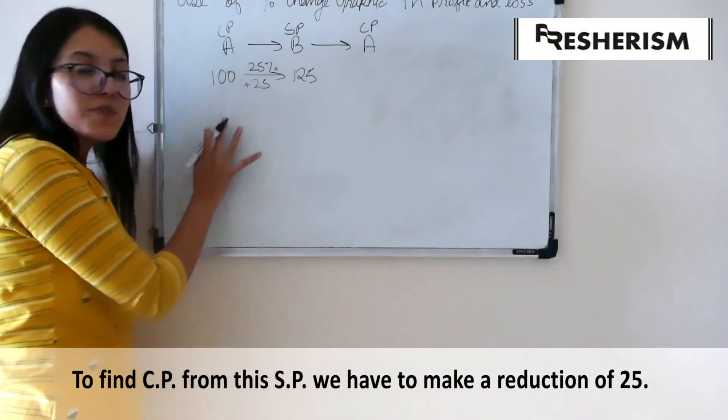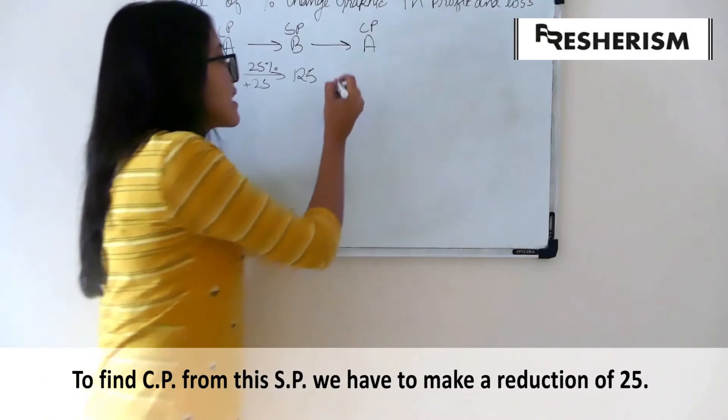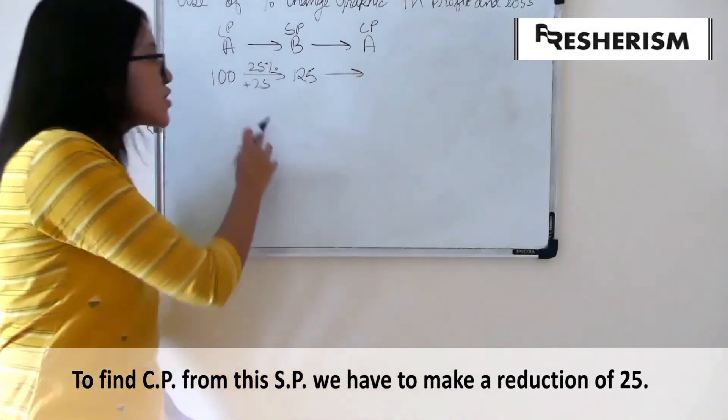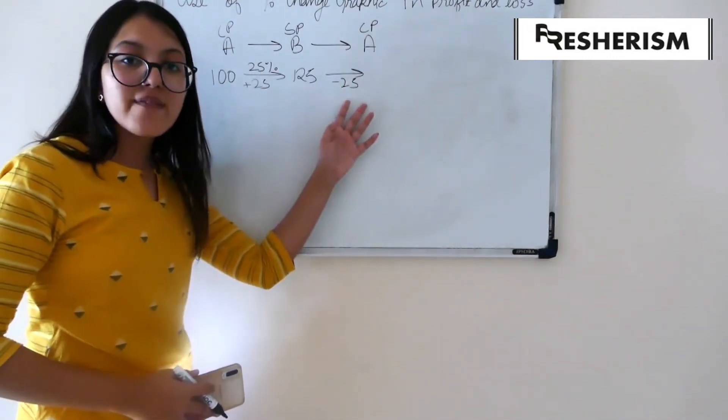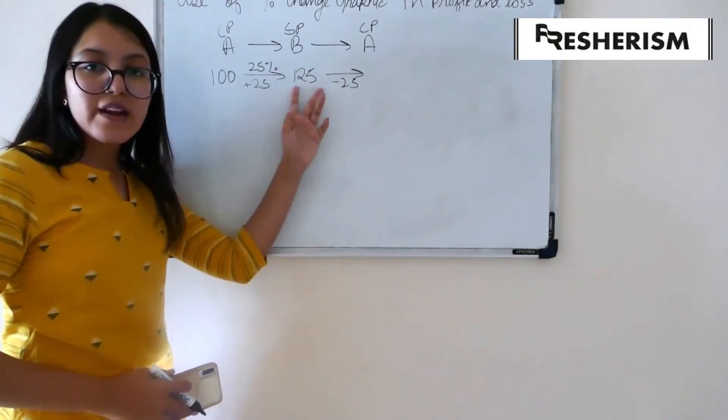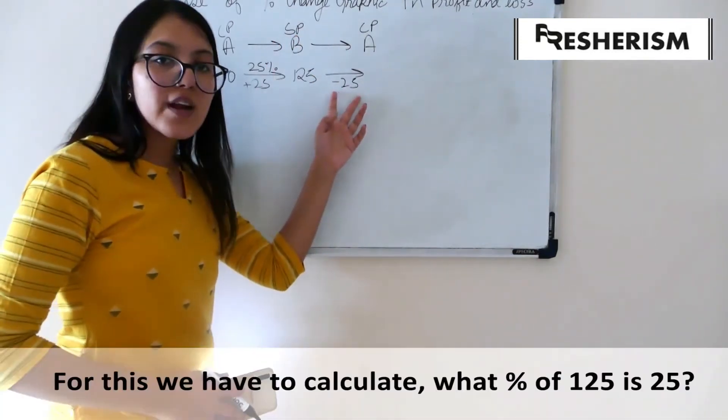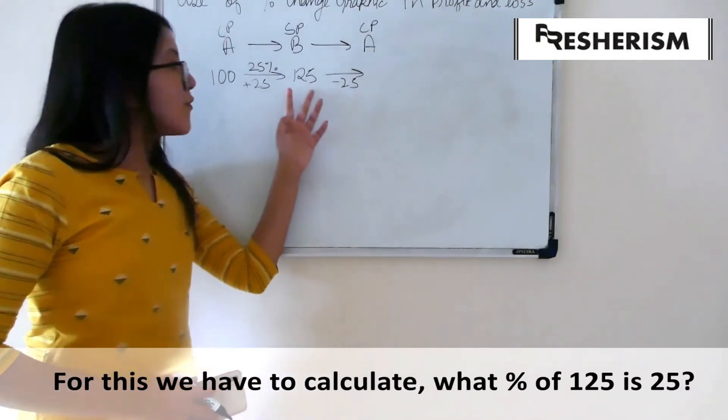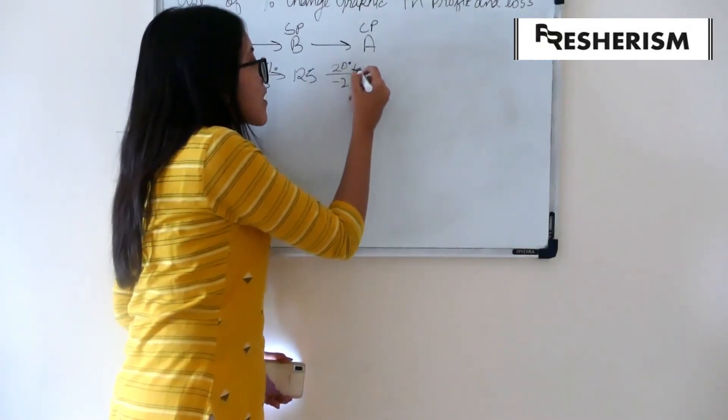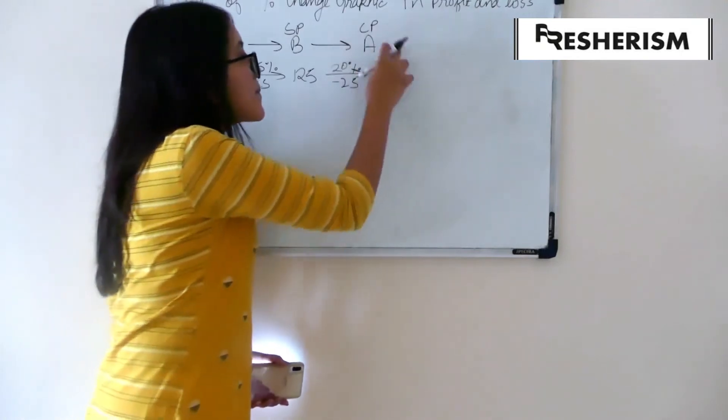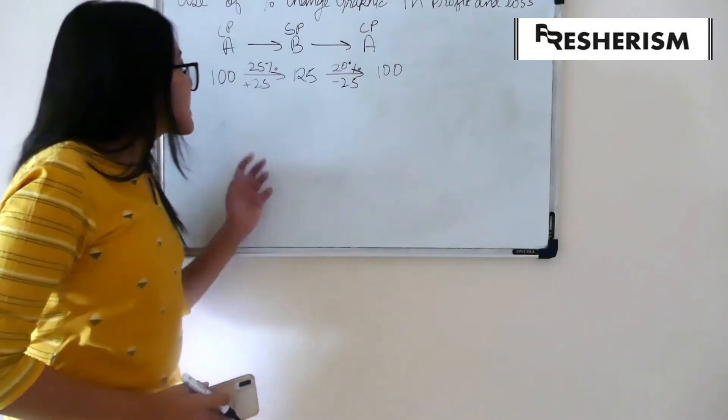Now, the reverse relationship comes over here. If I have to go back from selling price to my cost price, I have to reduce 25. But, this reduction of 25 is being made from 125 which is a selling price. Therefore, we have to calculate that what percent is 25 of 125 which is 20%. Therefore, we come back to our cost price as 100.